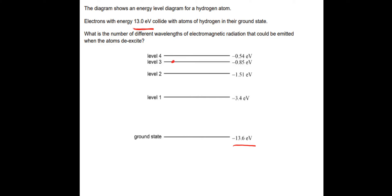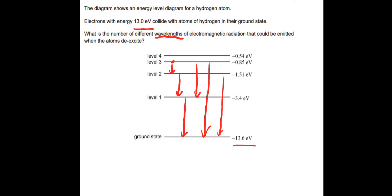The electron ends up at level 3, so we need to find what wavelengths could be emitted. We could go from level 3 to level 2 — that's 1 wavelength. Then from level 2 to level 1 — that's another. Then from level 1 to the ground state. We could also go straight from level 3 to level 1, from level 3 straight to the ground state, and from level 2 to the ground state. Each energy transition causes a photon to be emitted of equivalent energy to the energy difference. So the number of different wavelengths is 6.